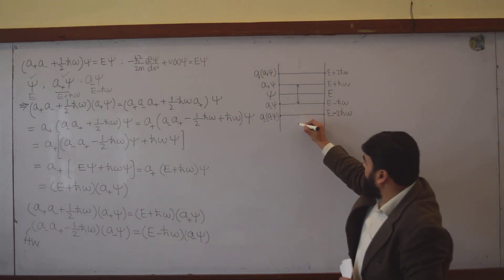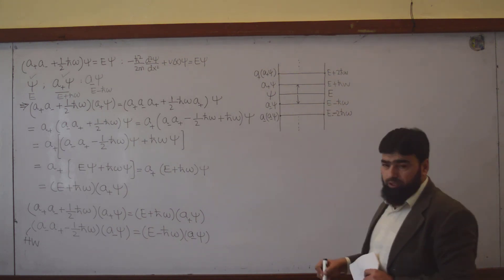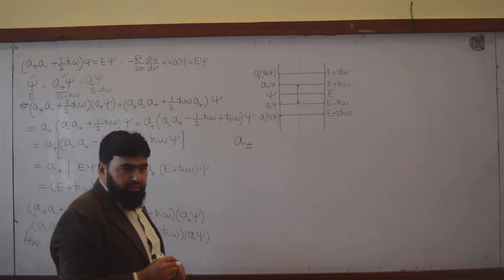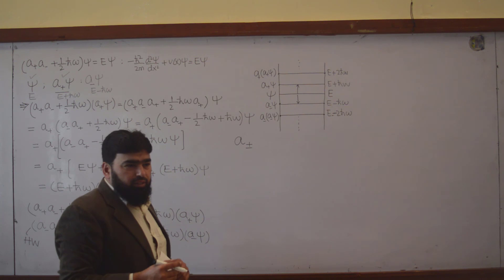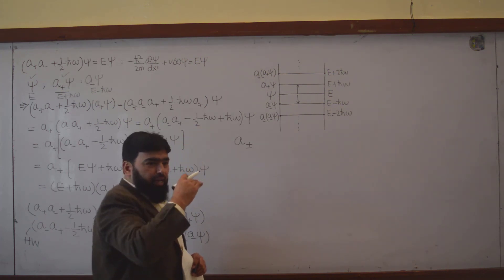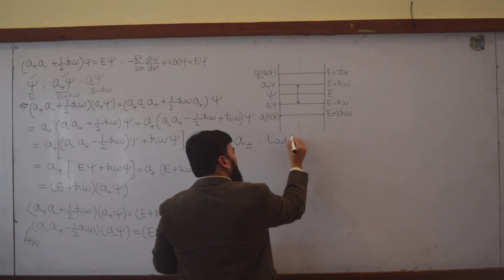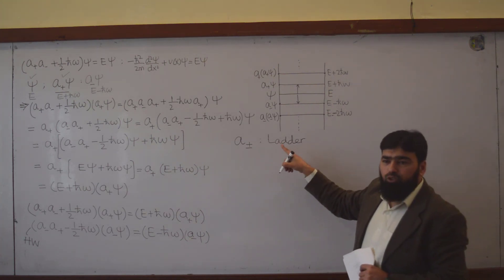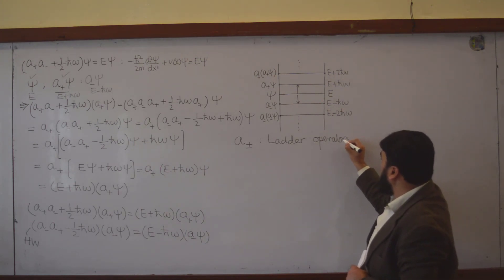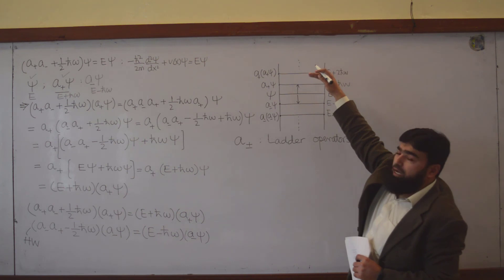So a₊ and a₋ are doing what? They are going levels up and levels down respectively — it is like a ladder series. We call these the ladder operators: a₊ is the raising operator and a₋ is the lowering operator. They are moving the system up or down the energy ladder.